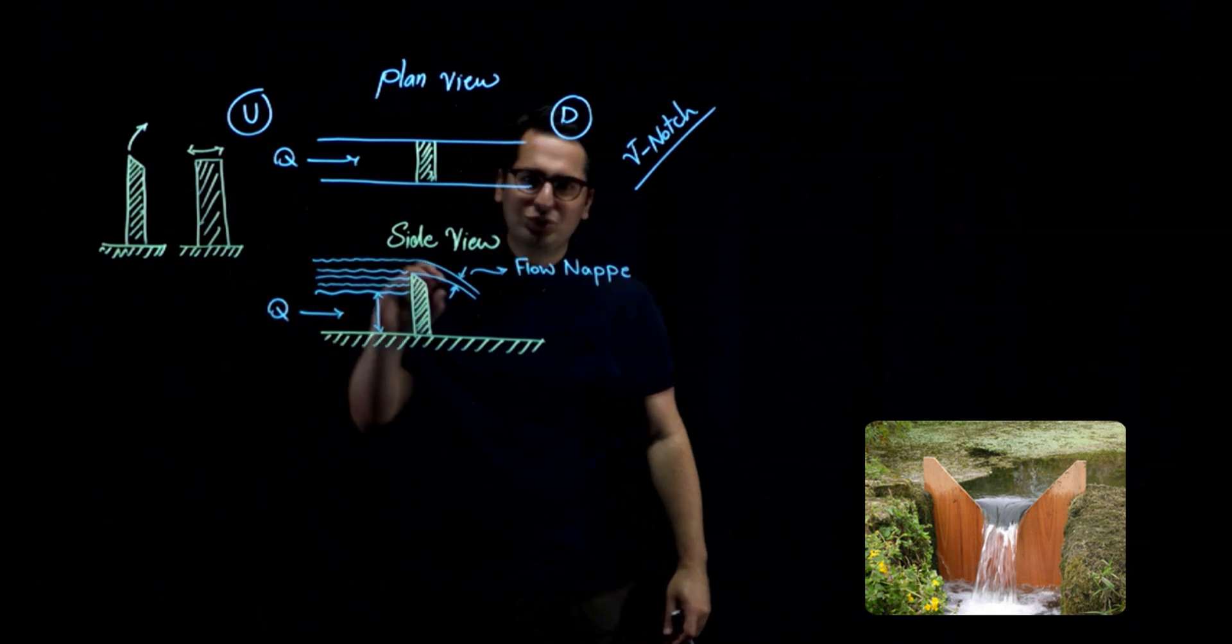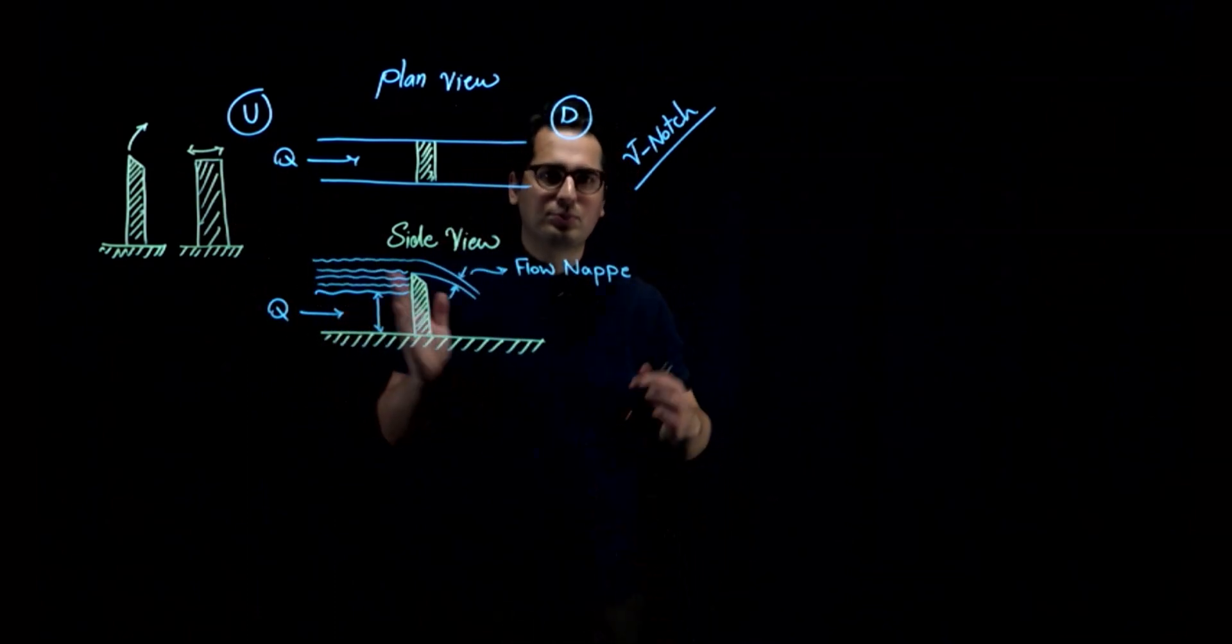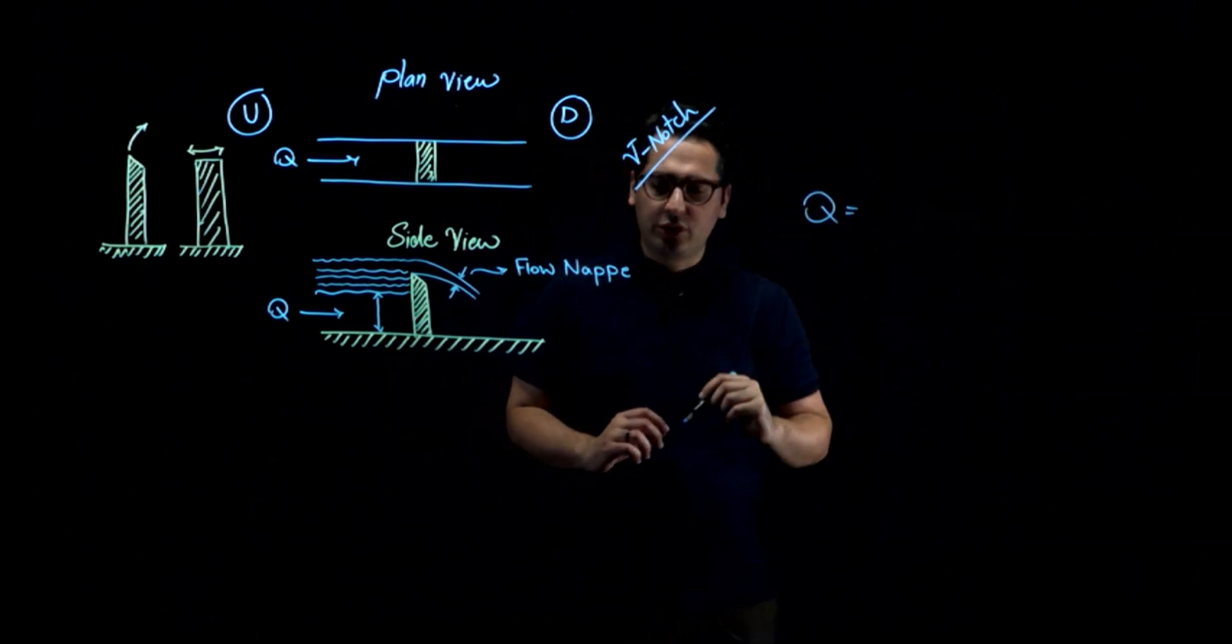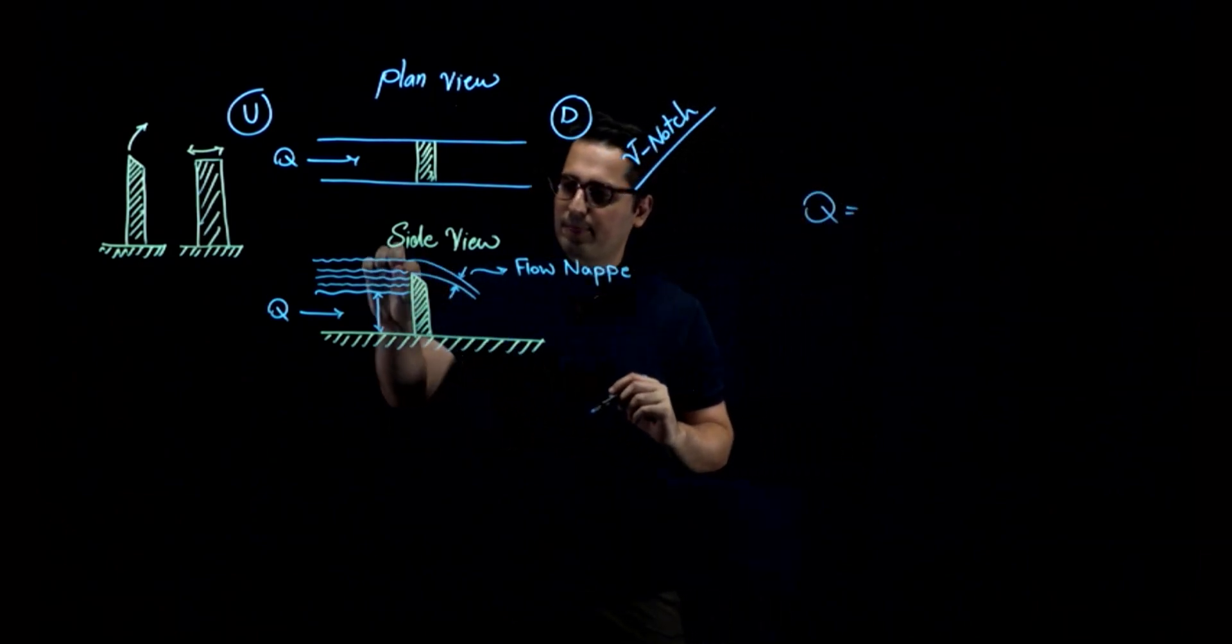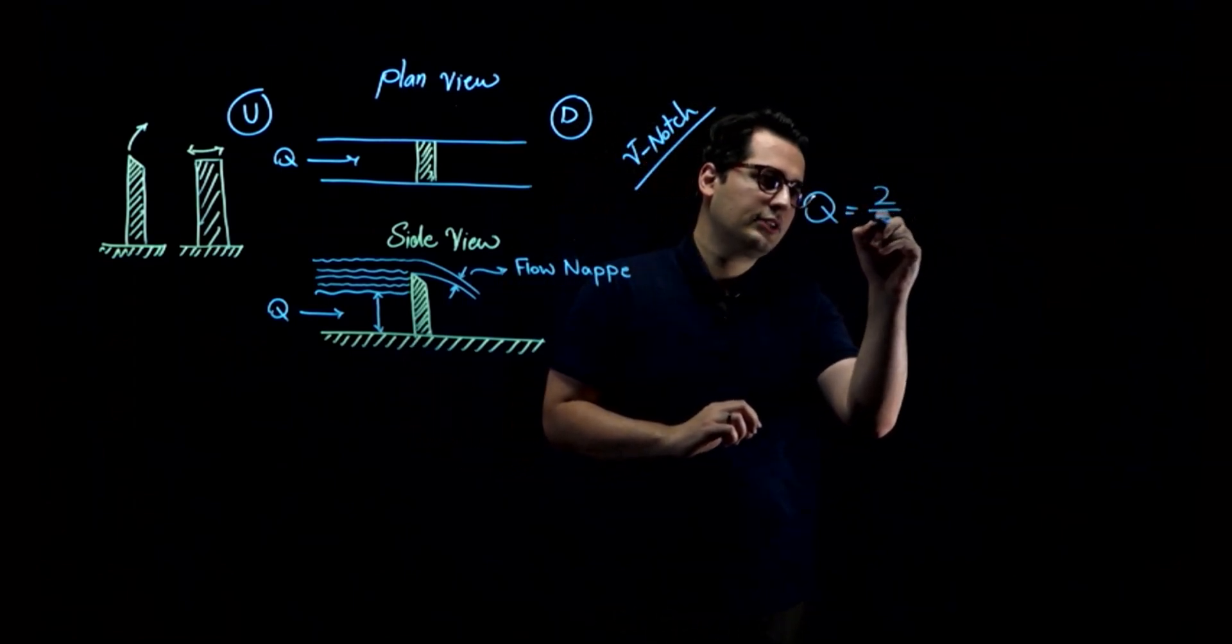For example, sharp-crested weirs are usually made of thin plastic or metal plates, and they are used in smaller channels to measure the flow rate. To calculate the discharge of water over a sharp-crested weir for a rectangular weir, the equation is something like this.